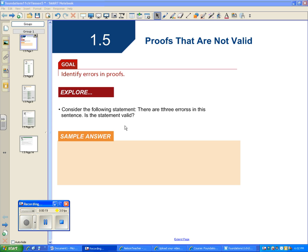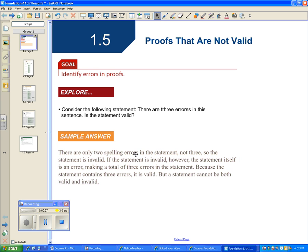Here is a sample answer: There are only two spelling errors in the statement, not three, so the statement is invalid. If the statement is invalid, however, the statement itself is an error, making a total of three errors in the statement. Because the statement contains three errors, then it's valid. But a statement cannot be both valid and invalid.